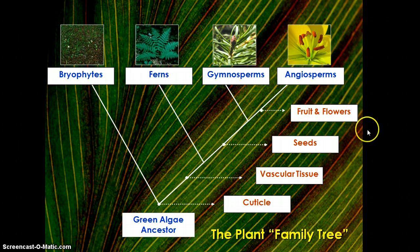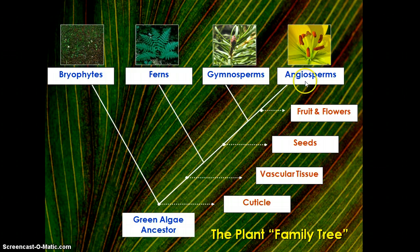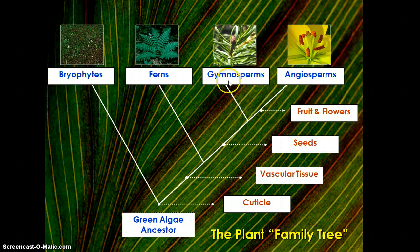So on this phylogenetic tree you can see what the mutations are that separate each of the four plant groups: bryophytes, which are tiny mosses; ferns, which have vascular tissue that bryophytes lack; gymnosperms, which were the first to have seeds; and angiosperms, our most advanced plants, which have fruit and flowers.